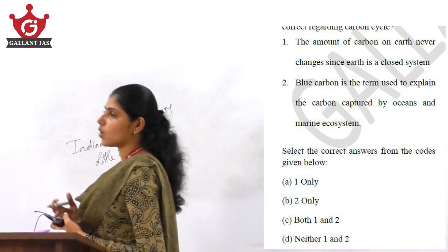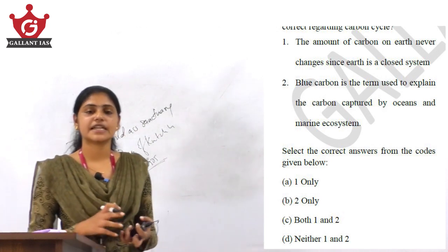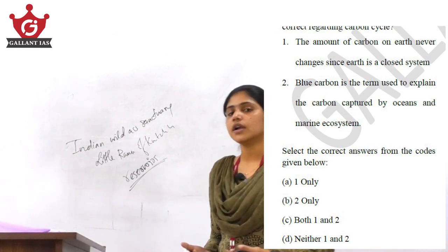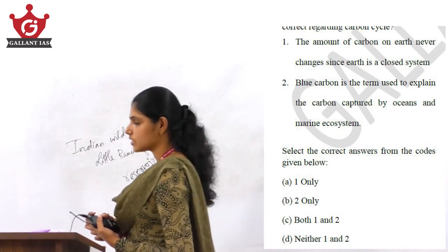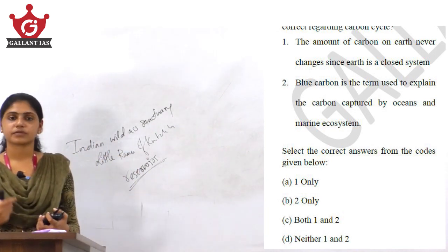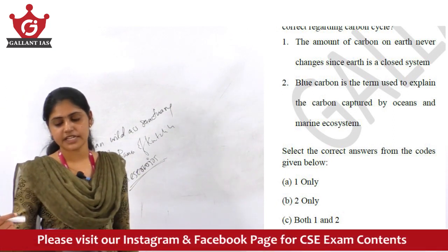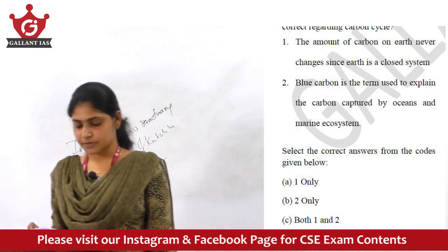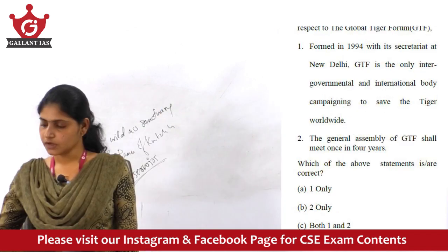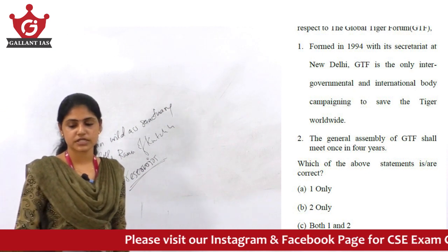However, when we consider earth as a whole closed system, we can say that the total amount of carbon is not changing. There will be changes happening with respect to individual reservoirs, but overall on earth as a closed system, carbon is not changing. So the first statement is also correct, and the answer is option C, both one and two.